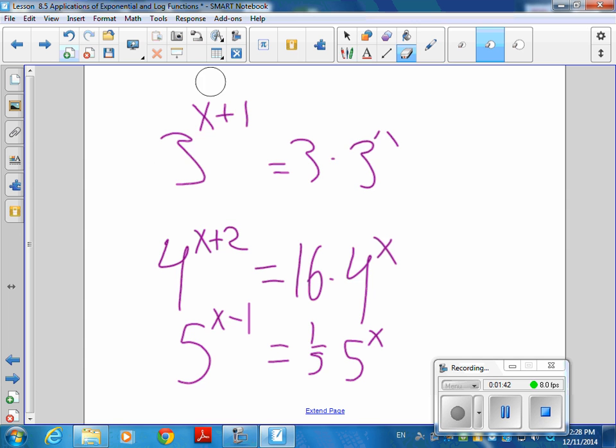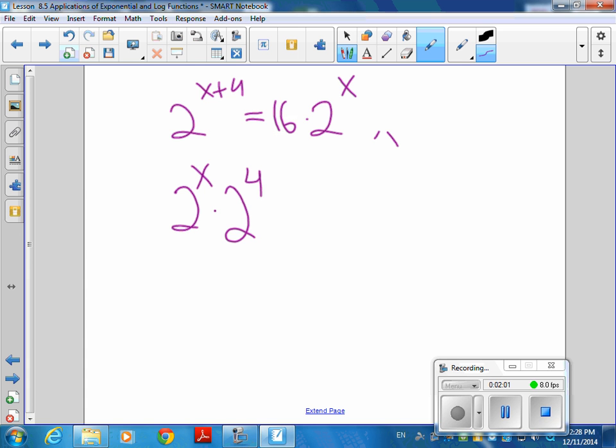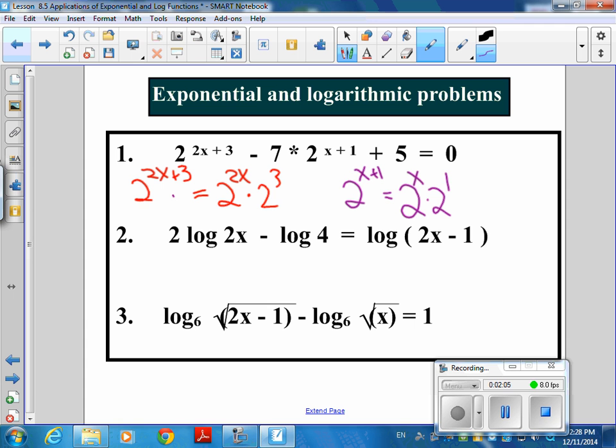Is this game getting easier? Let's try one more. How about 2 to the x plus 4? How many 2 to the x's is that? 16. So you get the idea that you're just taking 2 to the x times 2 to the constant, and that will tell you how many 2 to the x's there are. That's what I want you to think about.